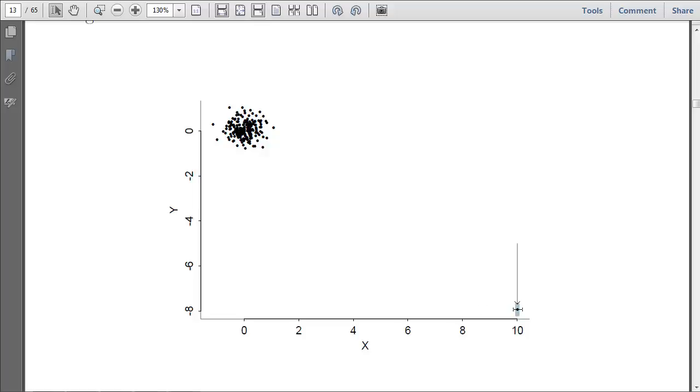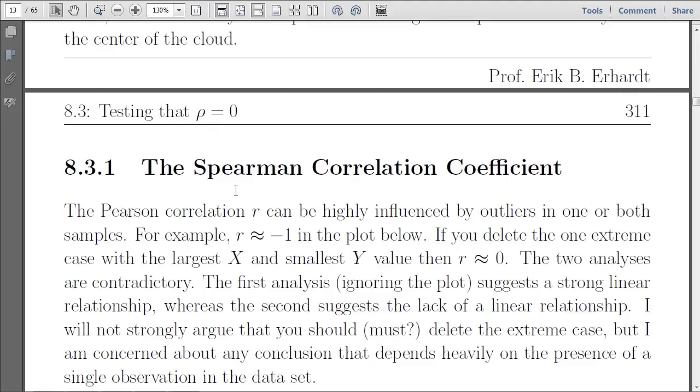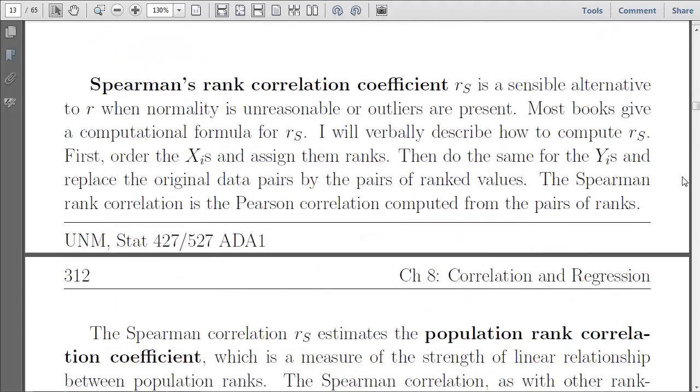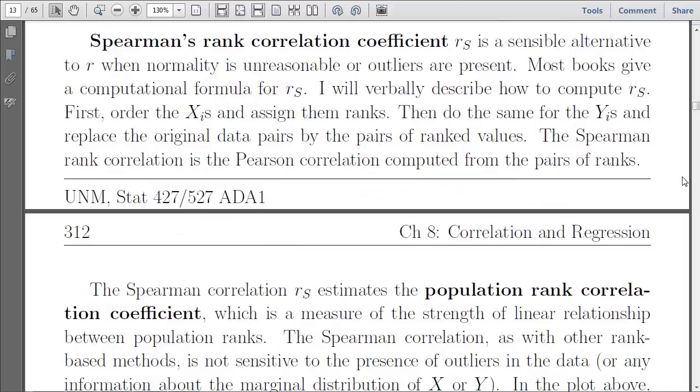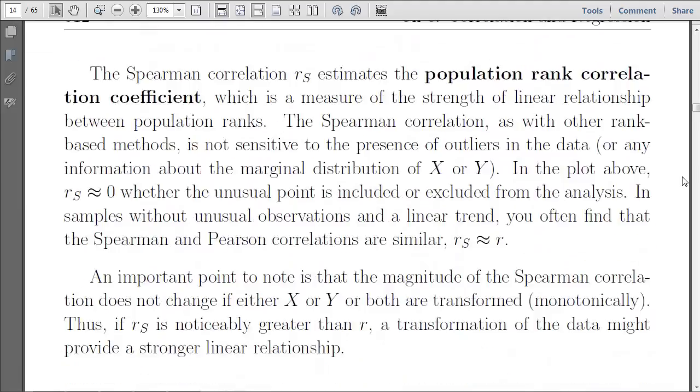Then you calculate the correlation based on the ranks instead of the actual numbers. What that does is it eliminates the distances between points and sets them instead to equal intervals, equal unit intervals. So the distance between, say, in the y direction, point number one and the second point, let's call that one number two, is equal to the second point and the third point. We've removed the dependency on distance instead favoring ranks. That removes the dependency then on the distance between points and makes outliers less influential. That's the intuition behind the Spearman correlation. It is a nonparametric strategy. Many nonparametric strategies are based on ranks of the data instead of the actual data.